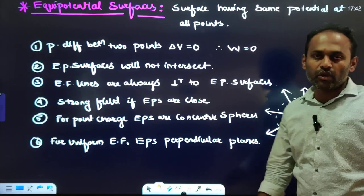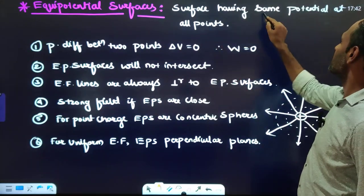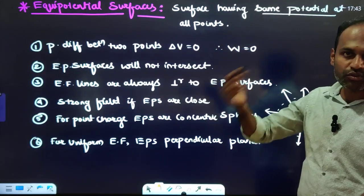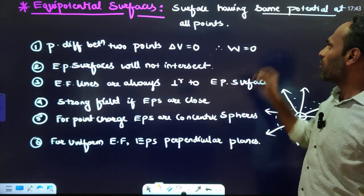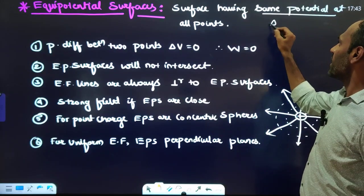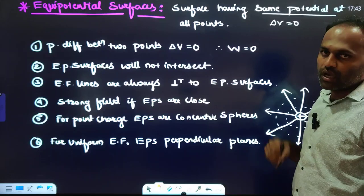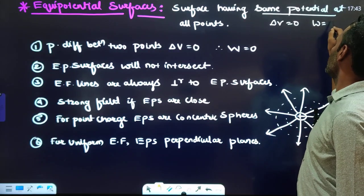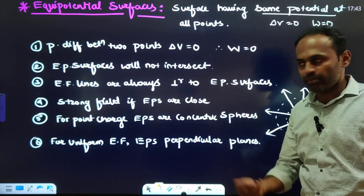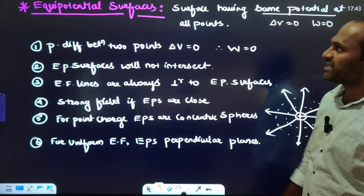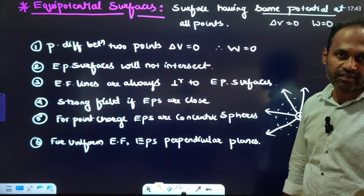Equipotential surfaces are surfaces having the same potential at all points. The potential difference between any two points on that surface is zero, so work done in moving a charge on an equipotential surface is zero. The best example of an equipotential surface is the surface of a charged conductor.